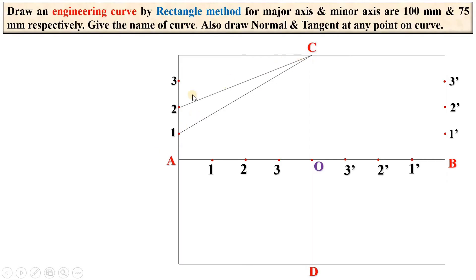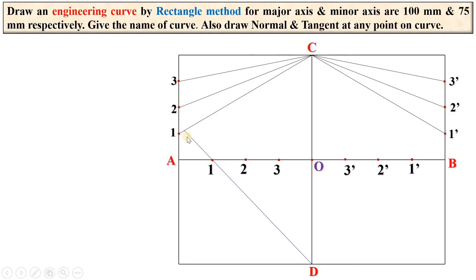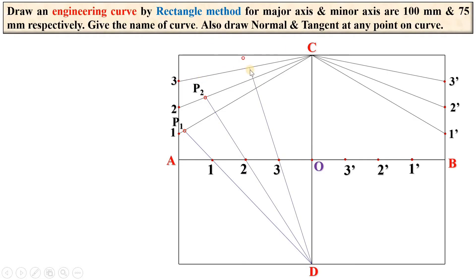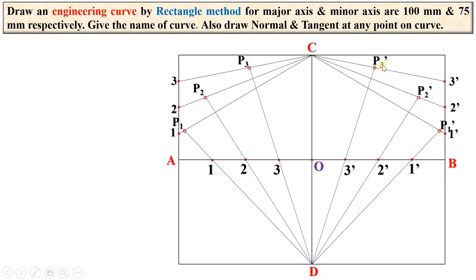Now join C1, C2, C3 with the help of the scale; similarly on the other side. Join D1 and extend it up to C1, and mark the intersection point as P1 — P1 is the intersection of lines C1 and D1. Next, join D2 and extend it up to C2 to get point P2. Then join D3 and extend it to get P3. Similarly, on the other side you will get P1 dash, P2 dash, and P3 dash.